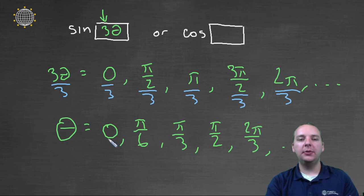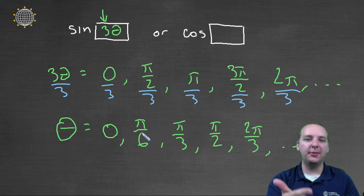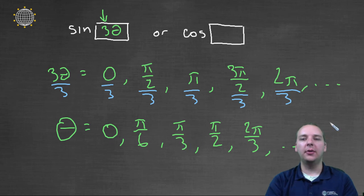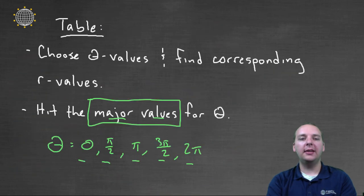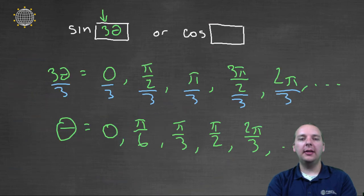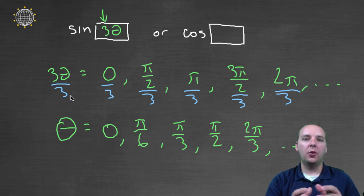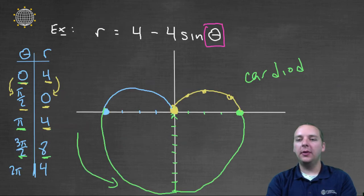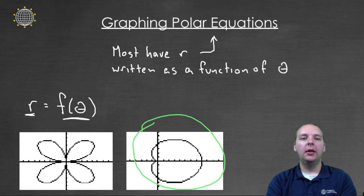What's three times pi over six? Well, that's pi over two. That's a major angle. What's three times pi over three? Well, that's pi. That's a major angle. So in fact, we are taking sine and cosine of our major angles, but when your theta is multiplied by a constant, you have to adjust your theta accordingly. So anyway, hopefully that helps you understand graphing polar equations a little bit better. We'll do some more examples in an upcoming video.